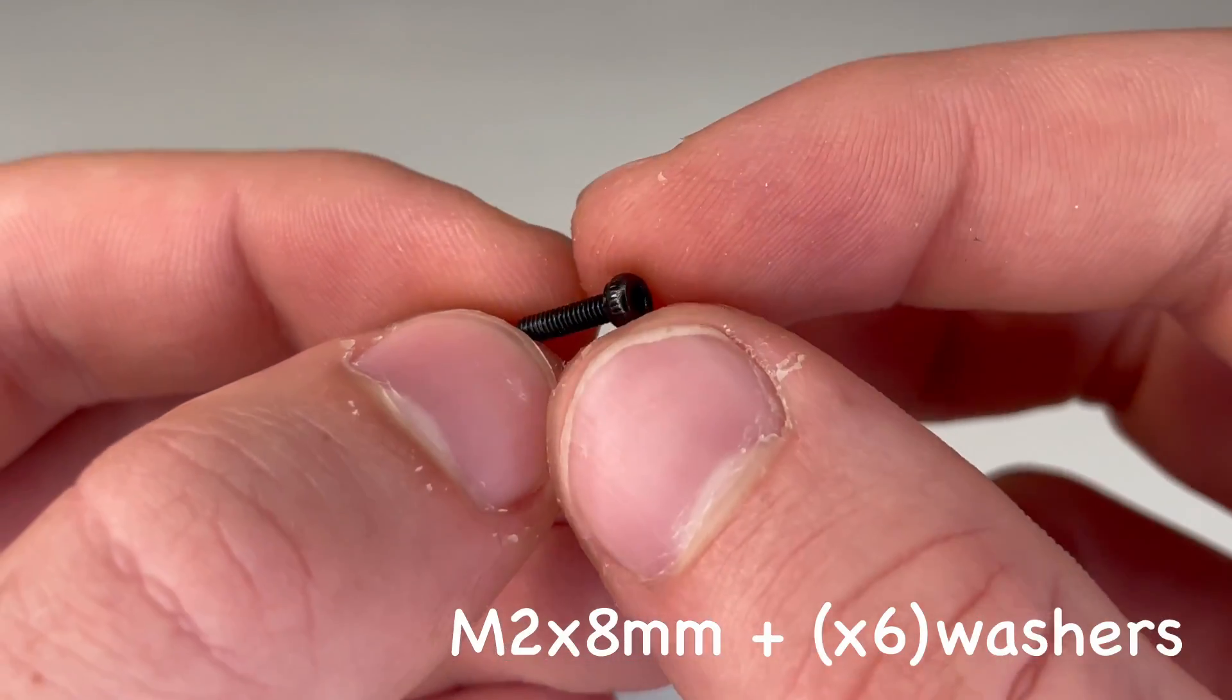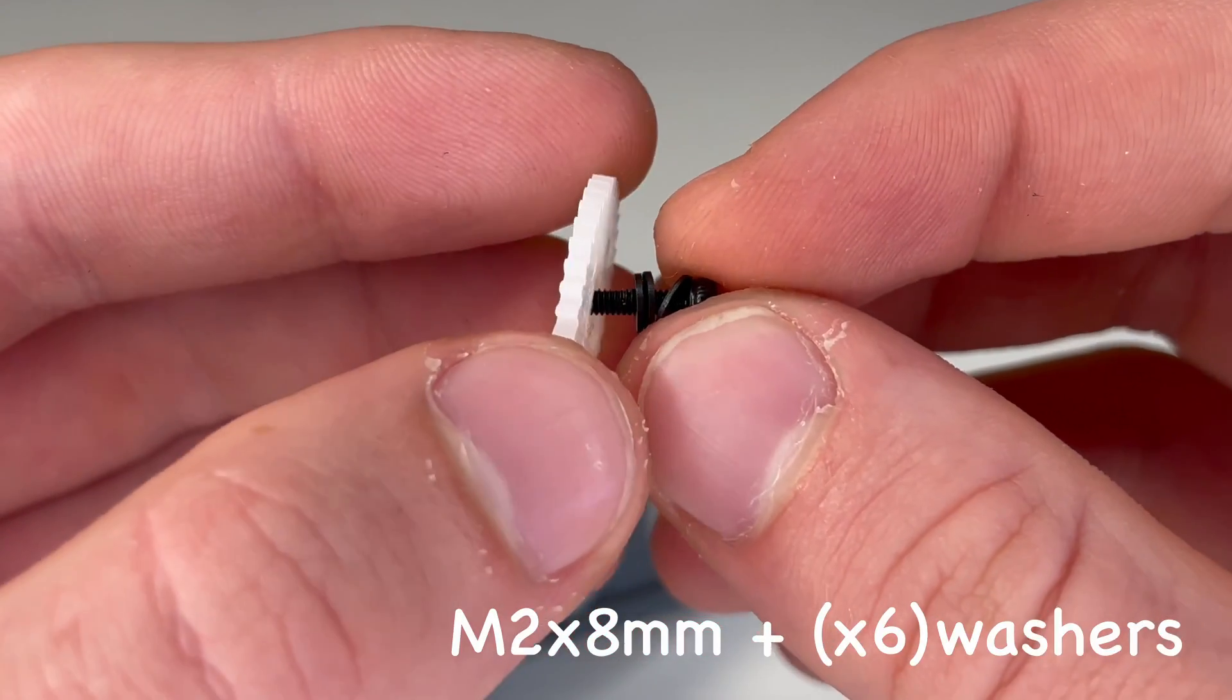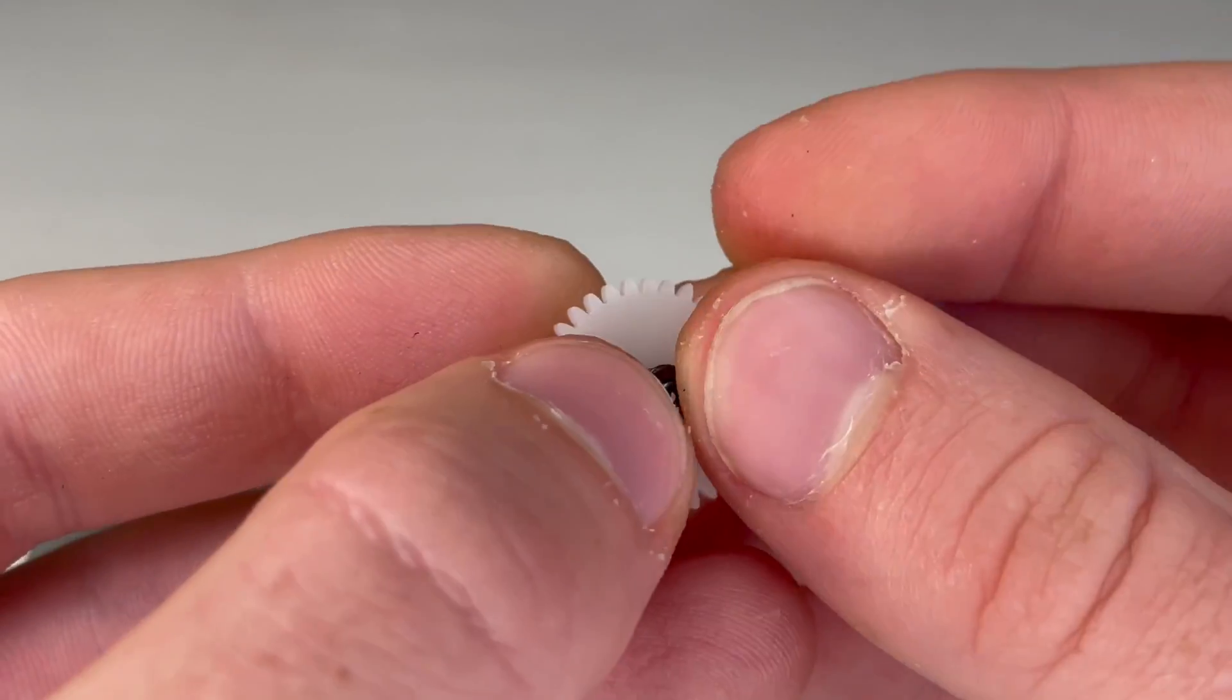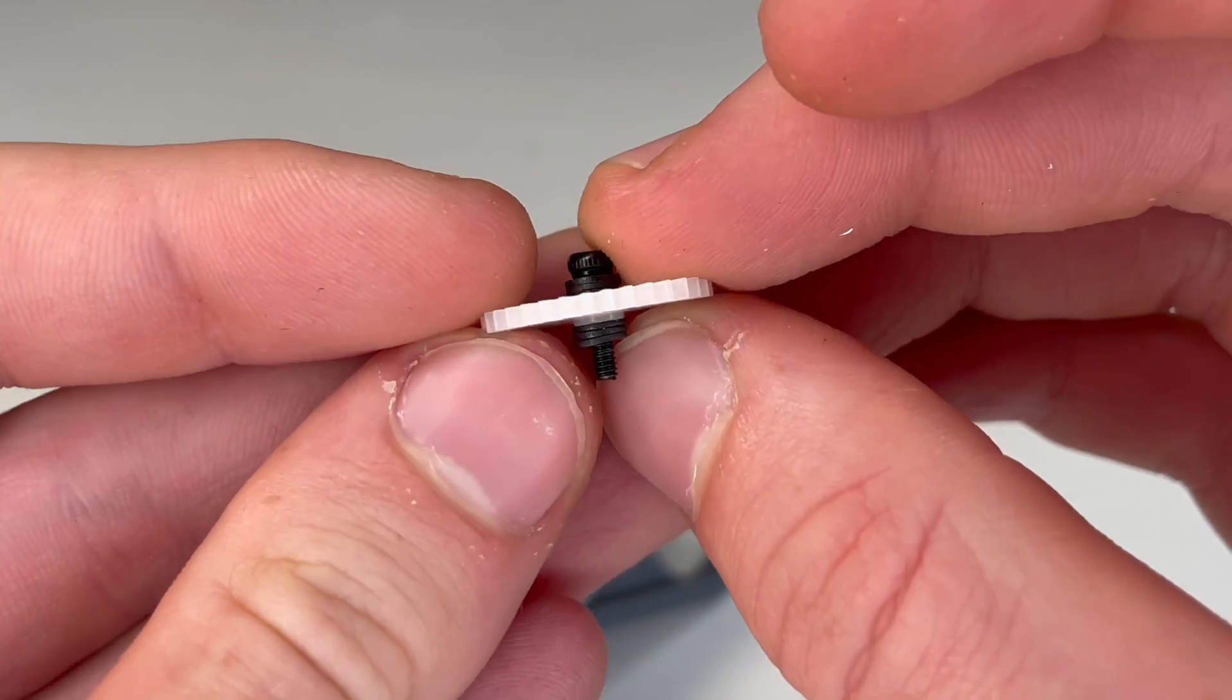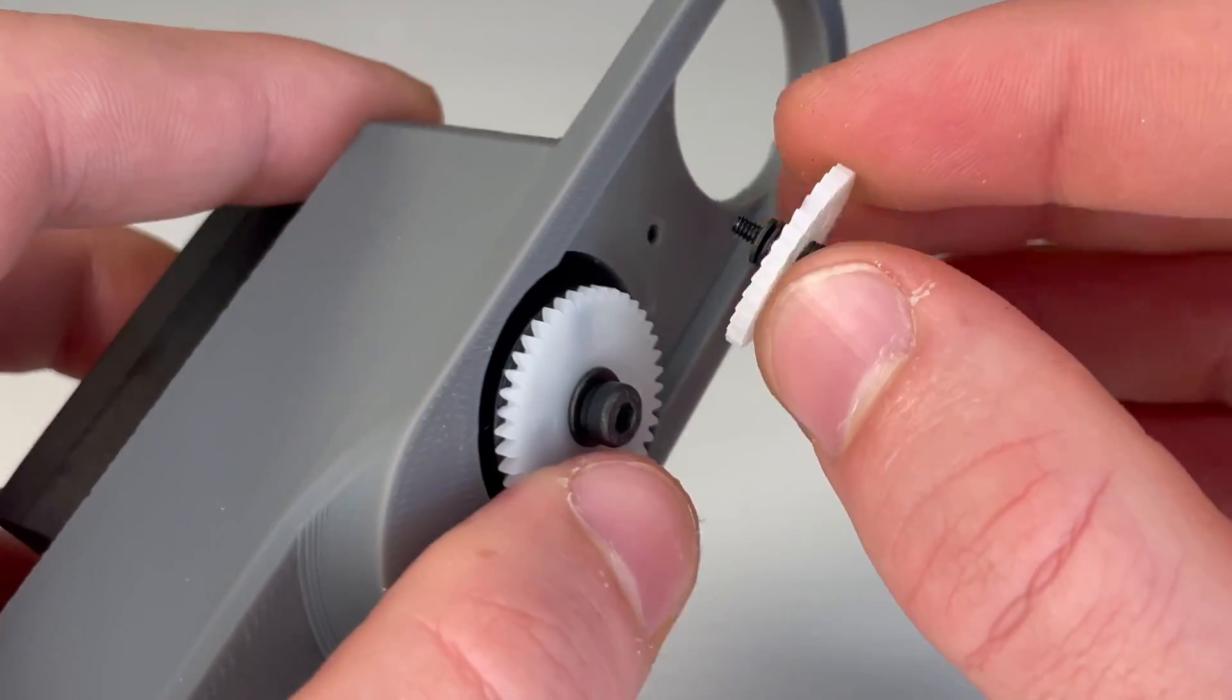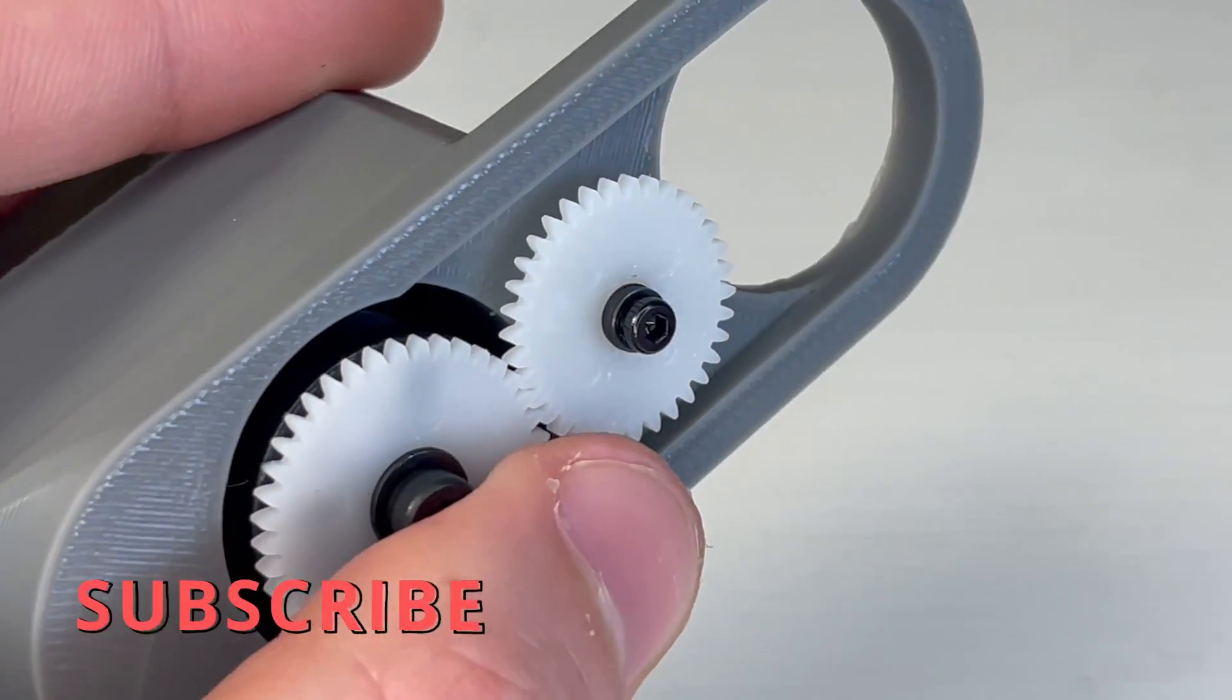And you'll screw it down using the four long screws in the servo bag. Now we will need one M2x8mm screw and six washers and our 34 tooth gear. Three of those washers will go on one side of our 34 tooth gear and the other three will go on the other side. We'll then screw this onto the forearm. And the next step is to subscribe if this video has been helpful so far.